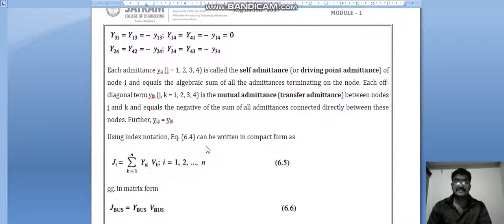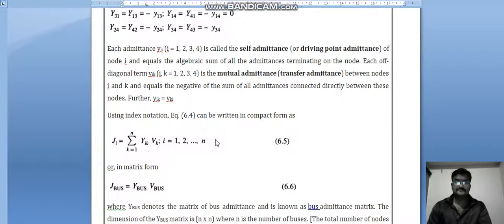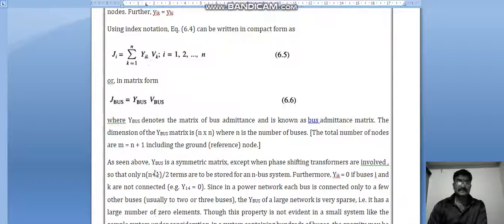Using index notation, equation 6.4 becomes Ji equals sigma k=1 to n (Yik*Vk), where i is from 1 to n. Ybus equals Ybus and Jbus equals Ybus times Vbus.